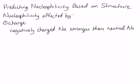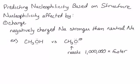Let's look at an example. We can see how charge affects nucleophilicity by comparing methanol and methoxide ion. In both cases, it is a lone pair on the oxygen that is acting as the nucleophile. But methoxide, with its negative charge, reacts a million times faster than methanol. Its negative charge and the additional electron density that comes with that makes methoxide the stronger nucleophile.